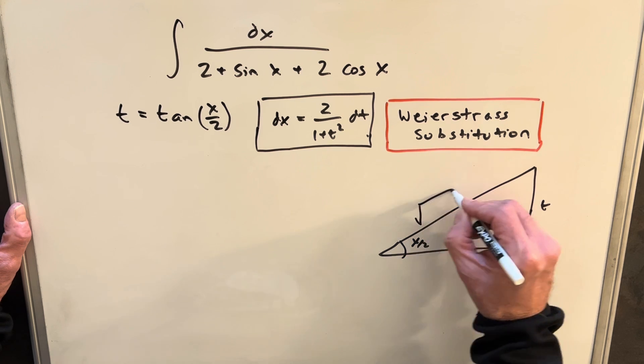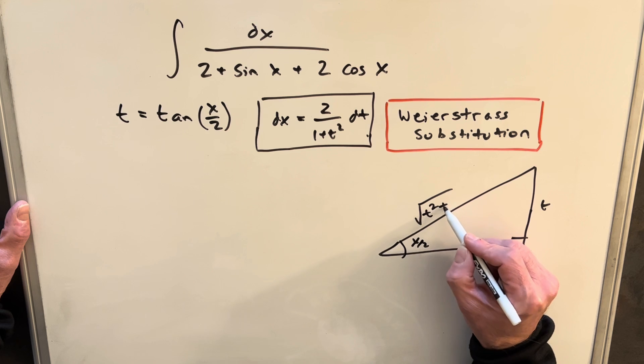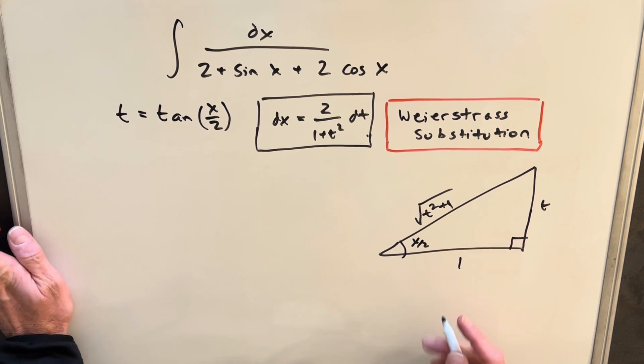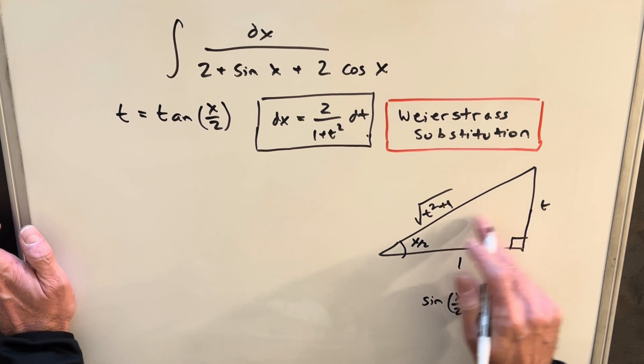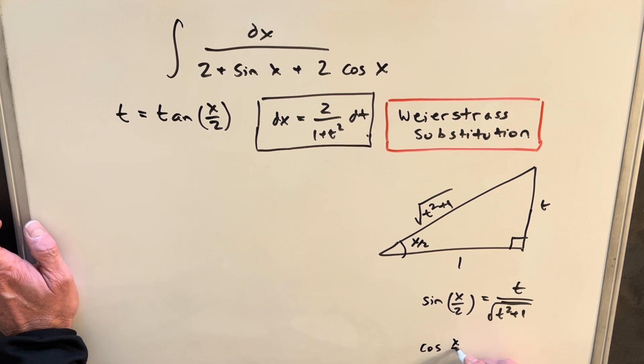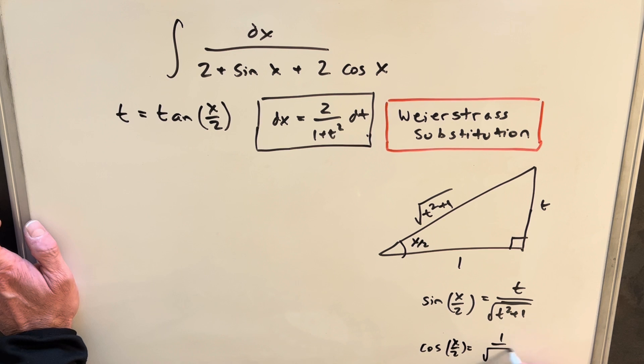Then using the Pythagorean theorem, we can find our hypotenuse, which is just going to be square root of t squared plus 1. And then what that allows us to do with this triangle is find our value for sine of x over 2, which is going to be t over square root of t squared plus 1. And then for cosine x over 2, it's just going to be 1 over square root of t squared plus 1.